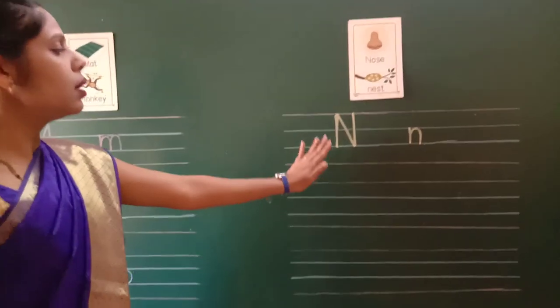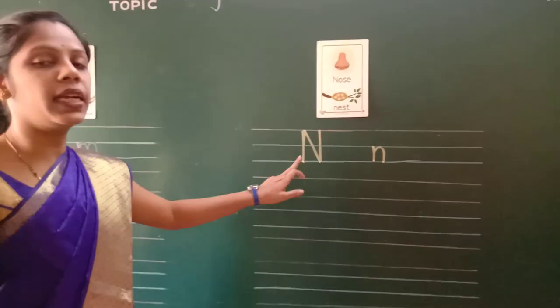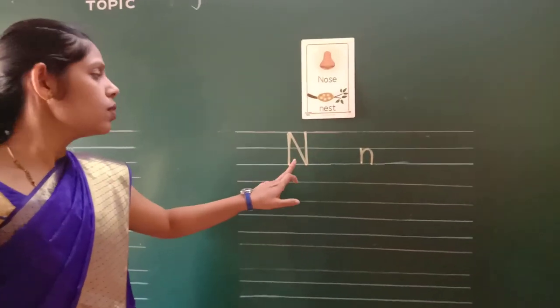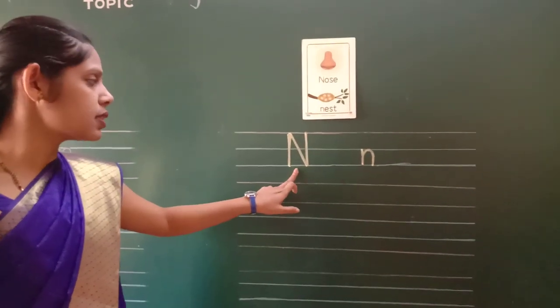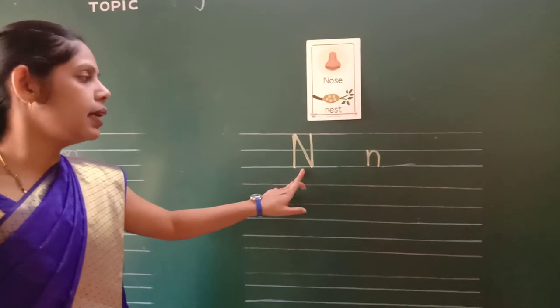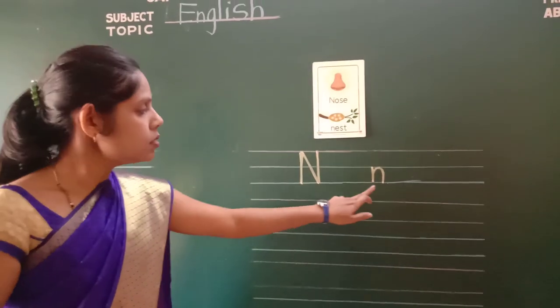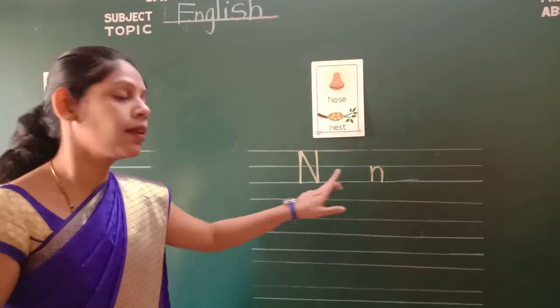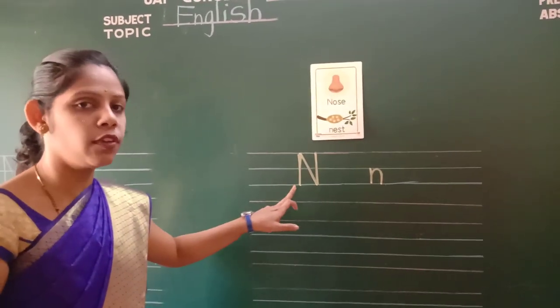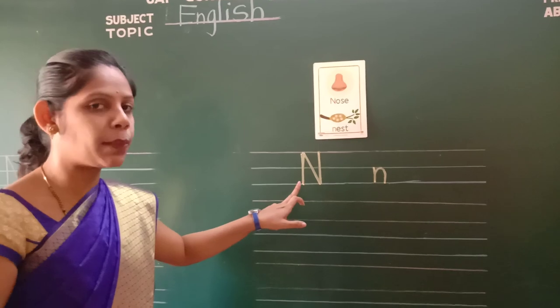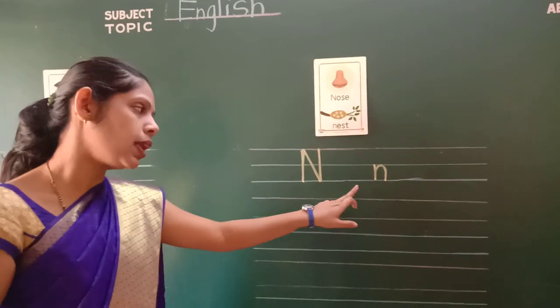On the other side of that same page, on the very first line, write down capital N, small n. I hope everyone knows how to write capital N and small n.